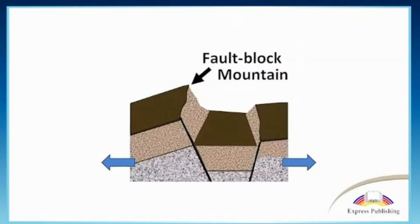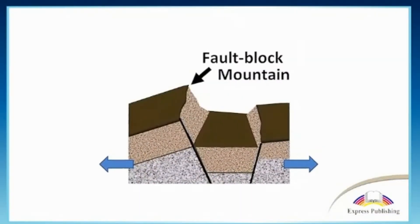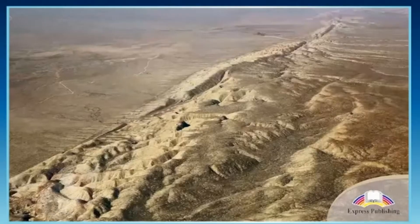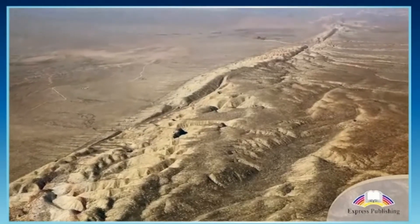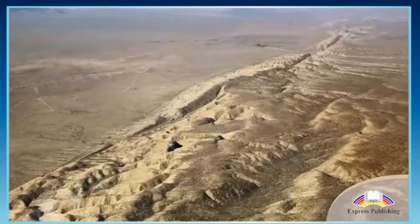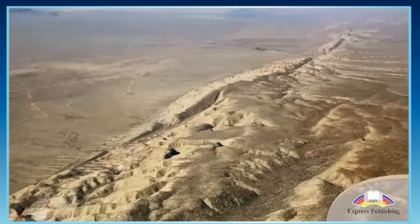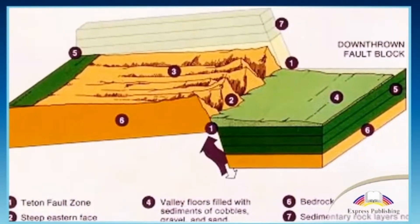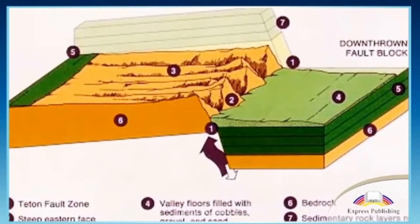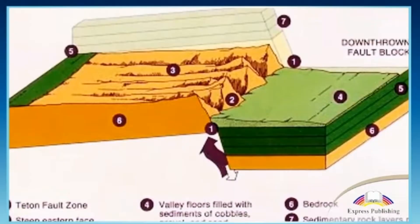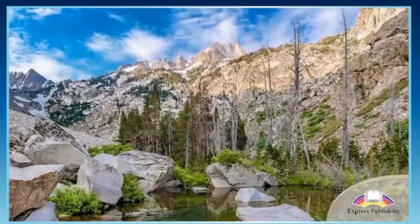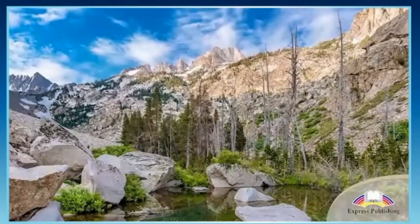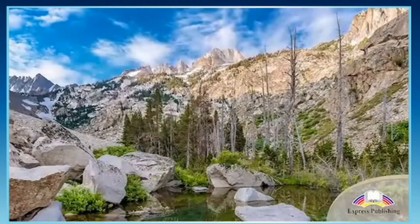Sometimes there is pressure inside a plate that makes it crack instead of folding. Geologists call this crack a fault line. The pressure from inside the Earth pushes the crust of one or more sides of the fault line up. This forms fault block mountains such as the Sierra Nevada range in the USA.